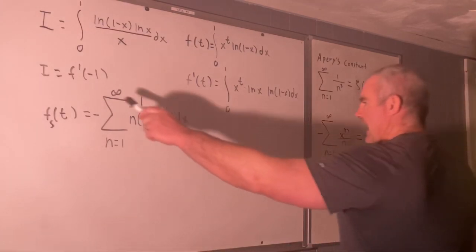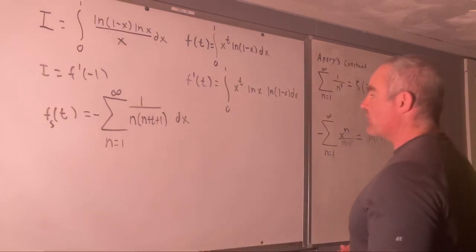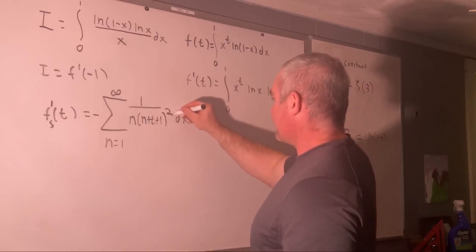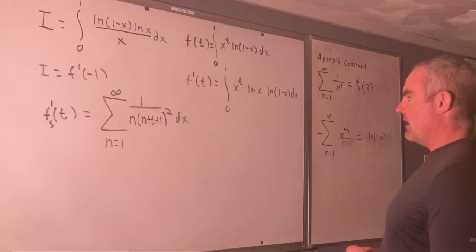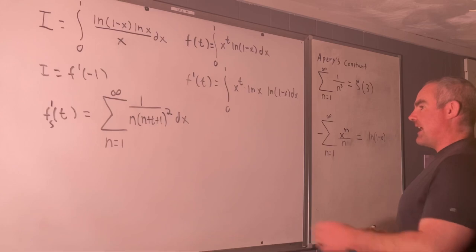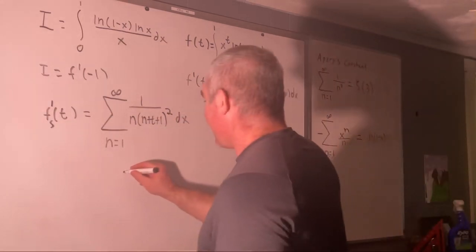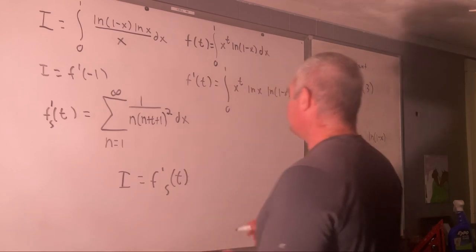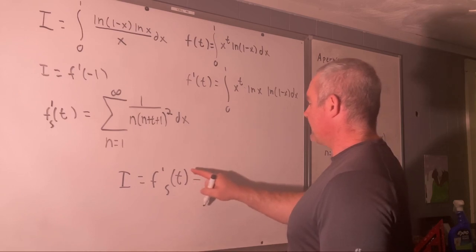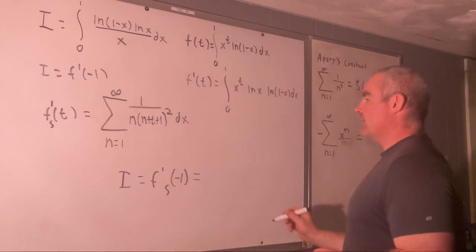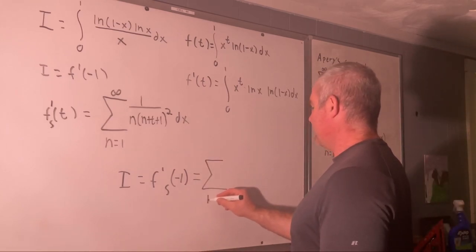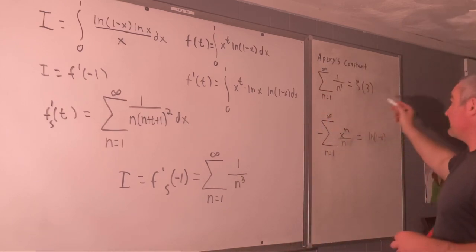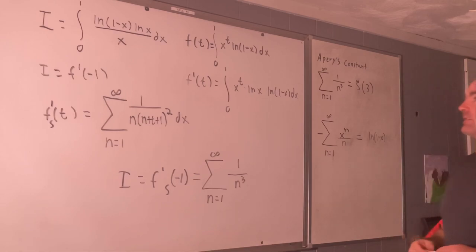But we are not interested in F of T, we want F prime of T, so let's just go ahead and take a derivative right now. That's going to add a squared here and it will introduce a negative sign. And now if we evaluate this at T is equal to negative one, we see that I is equal to F prime sub S of T at negative one and that is the sum from N equals one to infinity of one over N cubed and that's it. That's Apéry's constant. All right guys, there's my solution for that integral. Hope you enjoyed that.